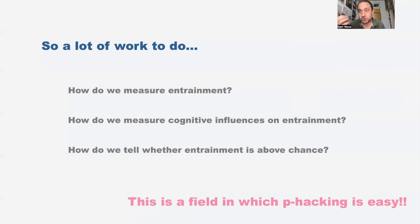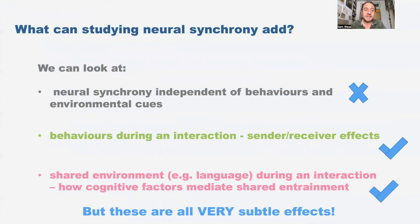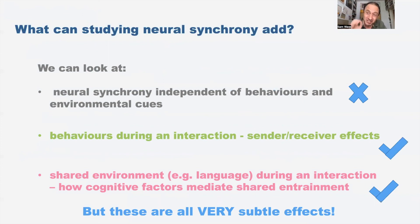So to summarize: I talked about three key differences between the real world and the settings in which we study brains. I feel quite uncomfortable with the idea of studying neural synchrony independent of being able to know where it's come from. But I do feel comfortable studying behaviors during an interaction and shared environment — and these are very subtle effects that we're finding hard to pick up.